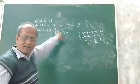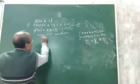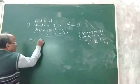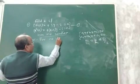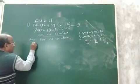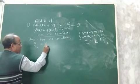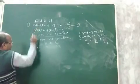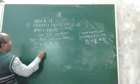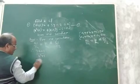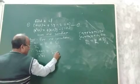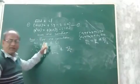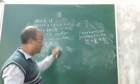We are given that the system has no solution, so we apply the condition: a1/a2 = b1/b2 ≠ c1/c2. Now substitute the values — the value of a1 is 3k+1, a2 is k²+1, b1/b2 is 3/(k−2), and c1/c2 is −2/−5 or 2/5. So on substituting the values of a1, a2, b1, b2, c1, and c2, we get this expression.